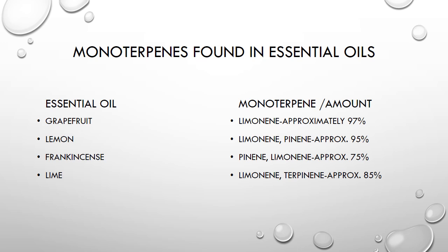Lemon has the same monoterpene limonene, but in addition also has pinene — both are found at approximately 95% in lemon. For frankincense, the same monoterpenes found in lemon are also present, but at a lower amount of approximately 75%. Lastly, lime has limonene and terpinene, found in lime essential oil at approximately 85%.